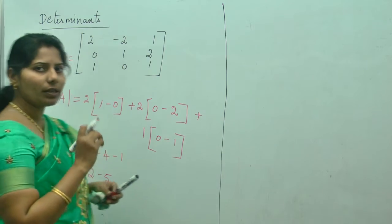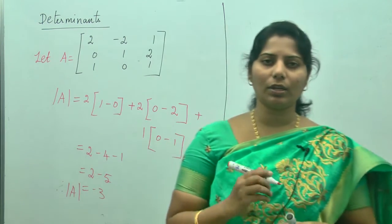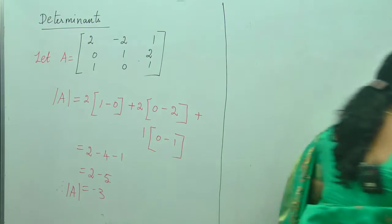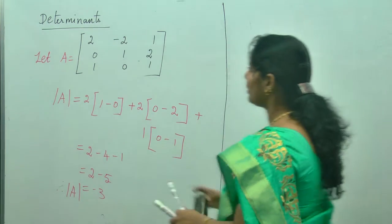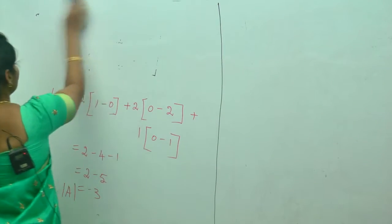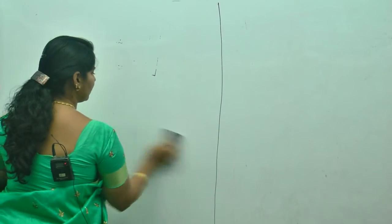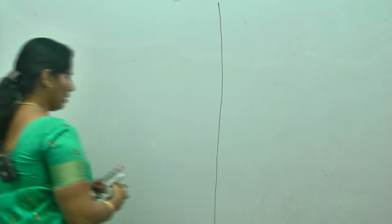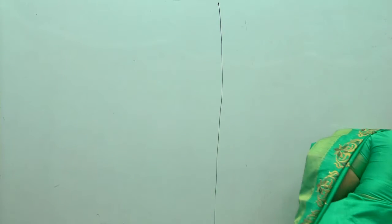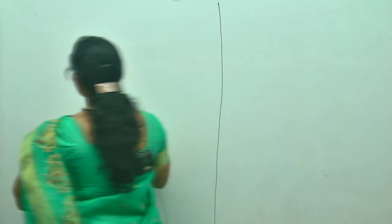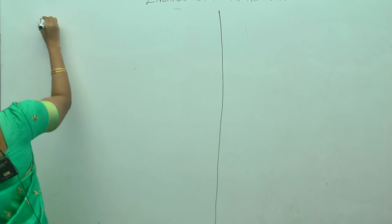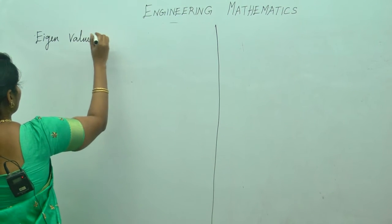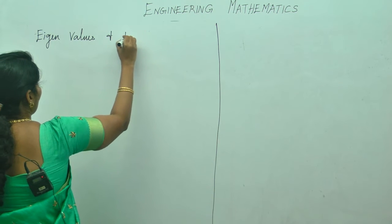Therefore, the determinant of A equals minus 3. So to find the inverse of the matrix, this determinant is very, very useful. Next, I am going to teach you the eigenvalues and eigenvectors of the given matrix A.